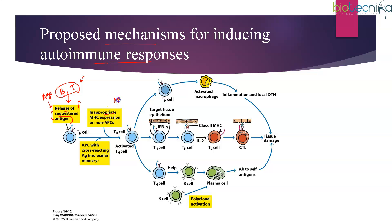The second mechanism is inappropriate MHC expression. Normally MHC is expressed only on professional APCs, but if non-APCs start expressing MHC, they will also take up antigens, process them, and present them to T cells. As a result, T cells get activated when that activation was not needed, causing autoimmune responses.